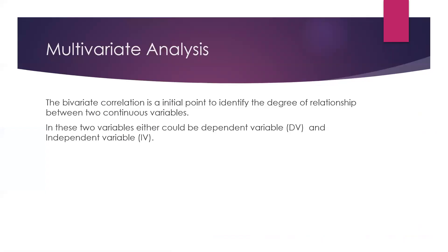Before starting multiple regression, we must understand what is multivariate analysis. Bivariate correlation is the initial point to identify the degree of relationship between two continuous variables. If you have two variables, first you run bivariate correlation to know the degree of relationship — whether there is any correlation or they are not correlated at all, and what kind of correlation these two variables have.